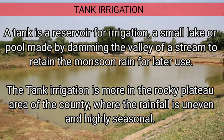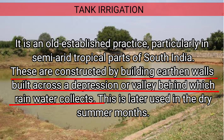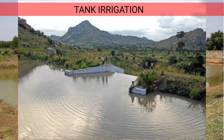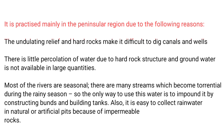Tank irrigation is a small lake or pool formed by damming valleys. It is very popular in the rocky plateau or southern plateau of India and is a very old traditional method, constructed by building earthen walls across a depression or valley behind which rainwater collects. It is most popular in Tamil Nadu, where 18.42 percent of the total area is irrigated through tanks, followed by Odisha, Andhra Pradesh, Kerala, and Karnataka. It is mostly present in the peninsular region due to undulating relief and hard rocks, which make it difficult to dig canals and wells. There is very little percolation due to impermeable rocks, and most rivers in the southern part are seasonal, so torrential rain during the rainy season can be collected in artificial or natural pits for later agricultural use.